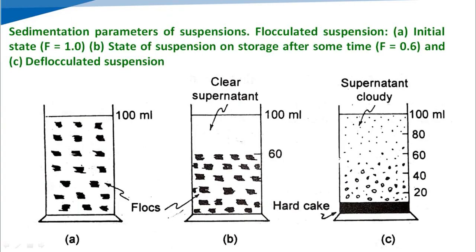With the help of a pictorial view, we can see the sedimentation parameter of the suspension. For a flocculated suspension in the initial state, when we have prepared the suspension and placed it in a cylinder, the value of F equals 1. That means the ultimate height of the sediment equals the initial height of the suspension, so there is no sedimentation.